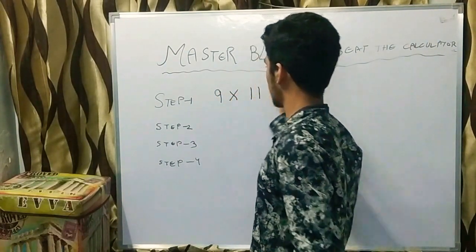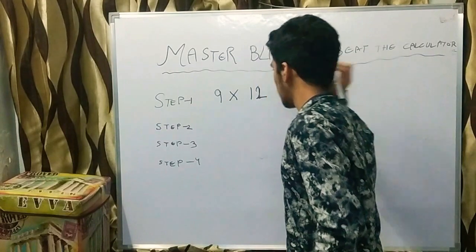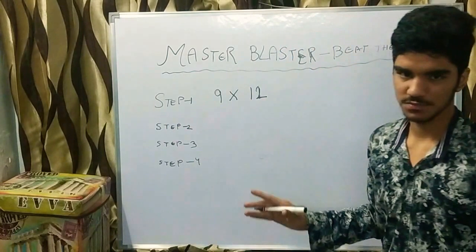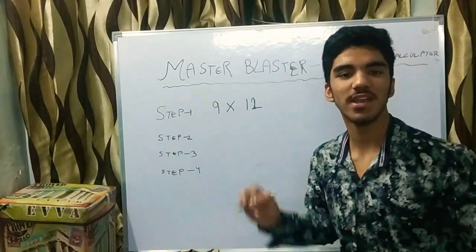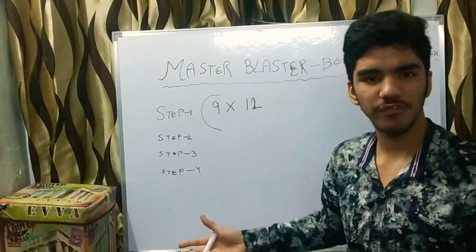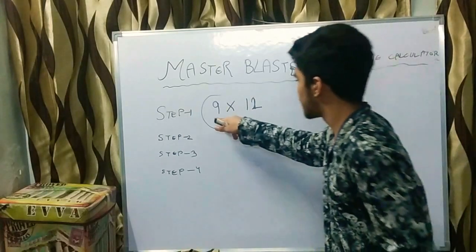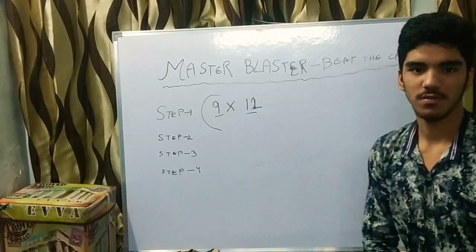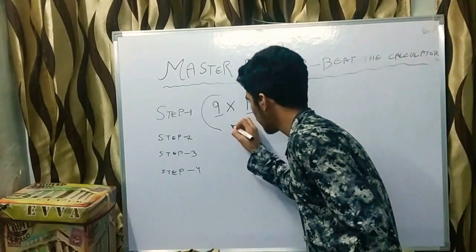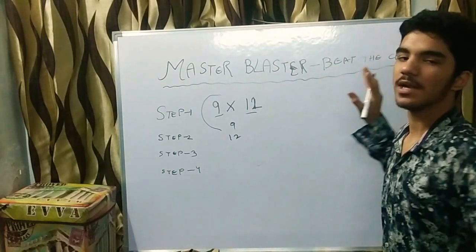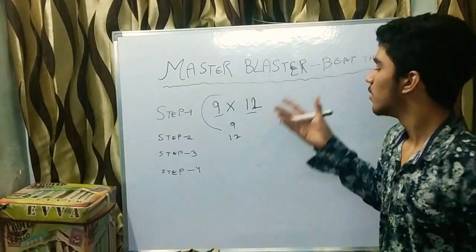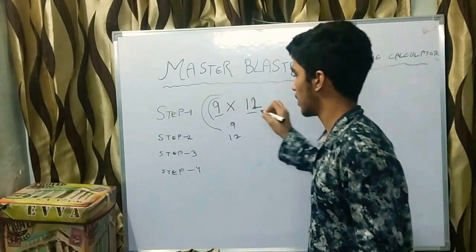Let us take 9 into 12. In Step 1, just write the number. Step 2, you have to see the nearest number — the nearest hundreds, tens, or fifties. The nearest number to both 9 and 12 is 10, so write the numbers 9 and 12 and note how much you have to subtract or add from 10.